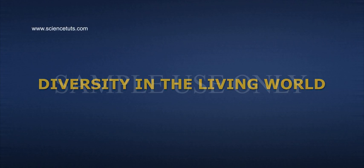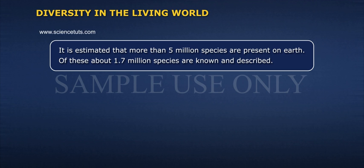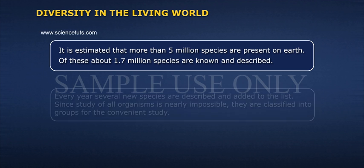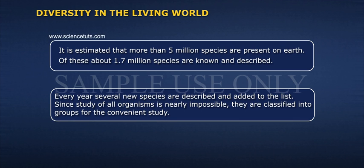Diversity in the Living World. It is estimated that more than 5 million species are present on Earth. Of these, about 1.7 million species are known and described. Every year, several new species are described and added to the list. Since study of all organisms is nearly impossible, they are classified into groups for convenient study.